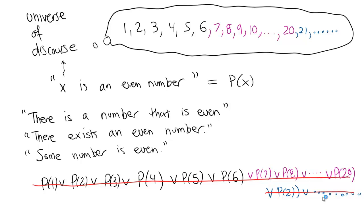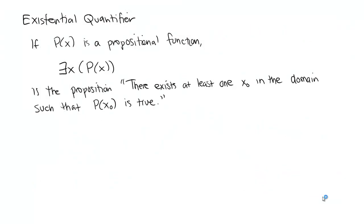We introduce the existential statement. 'There is a number that is even,' 'there exists an even number,' 'some number is even' — these are written with the symbol: upside-down E, x, P(x). That symbol is read: 'there exists an x such that P(x) is true.' Formally, the existential quantifier says: there exists at least one x₀ in the domain of discourse such that the proposition P(x₀) is true.